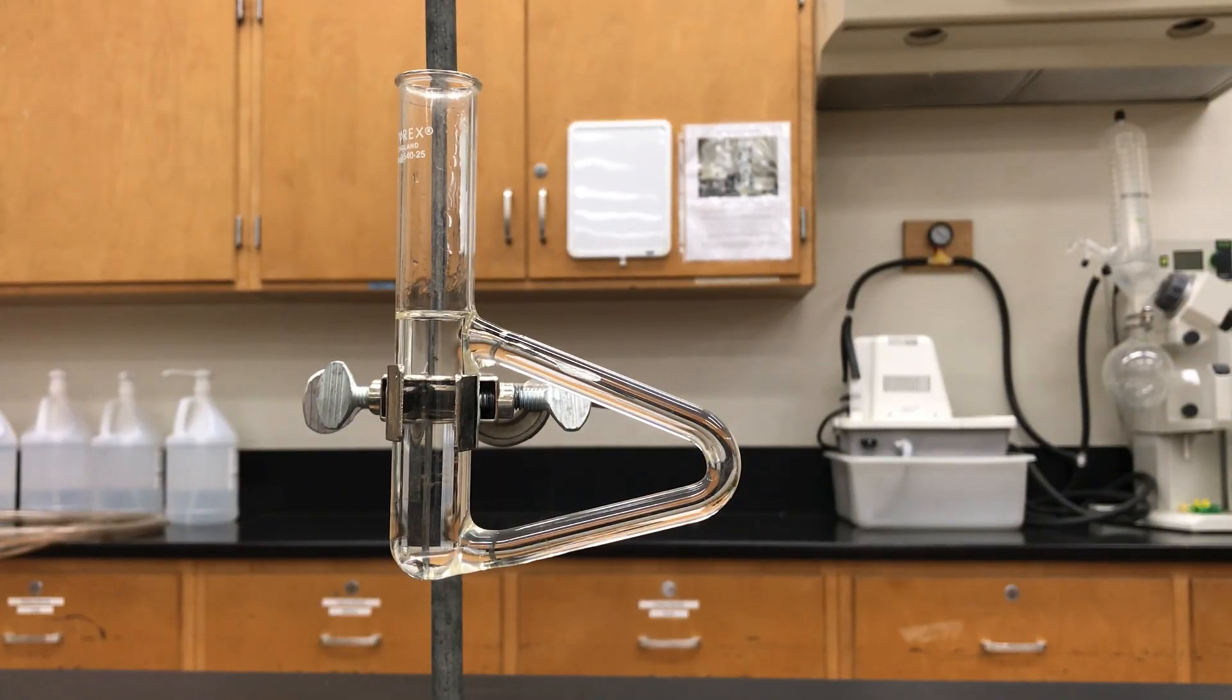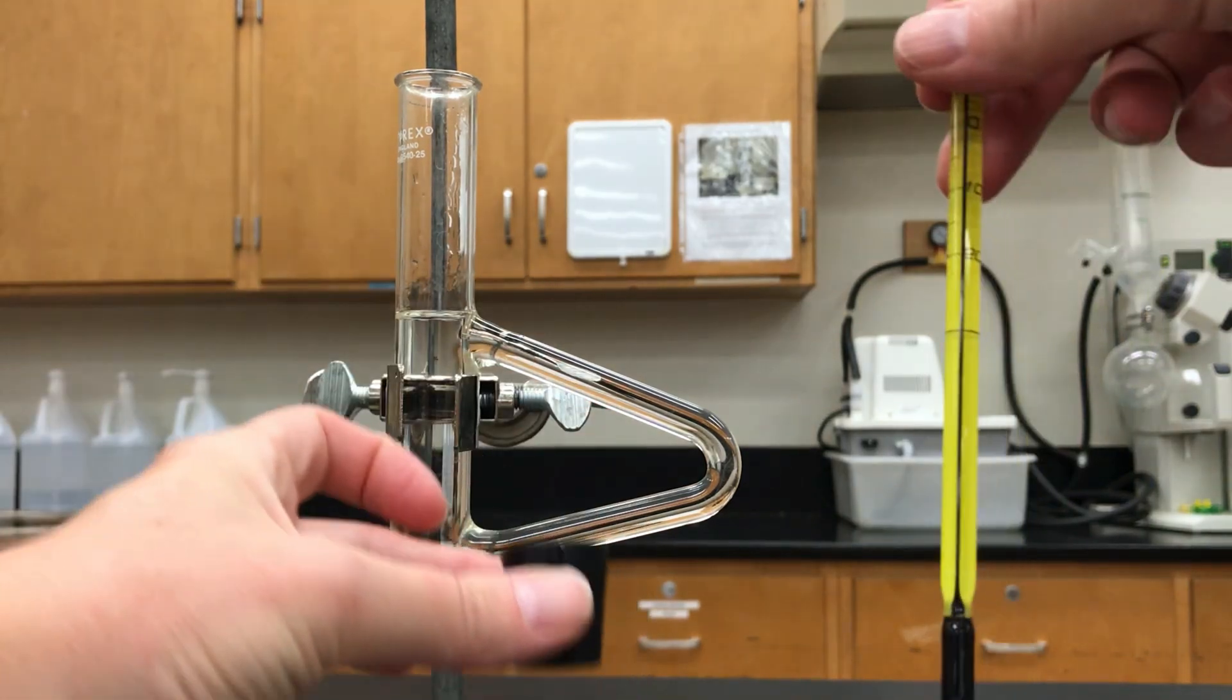First you'll want to clamp the Thiele tube to a ring stand and I tend to clamp it right at the triangle. You also want to make sure that there's enough oil in the tube. It should completely cover that triangular area. There should be no gaps.